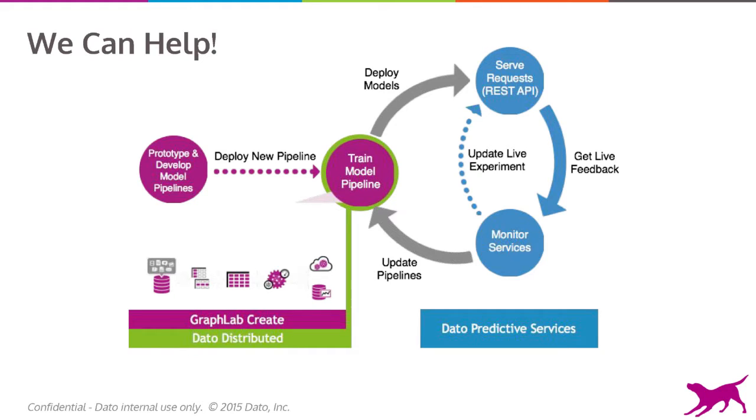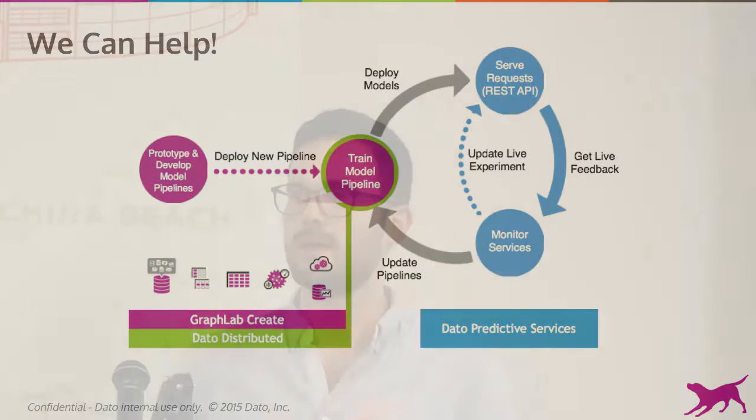We have GraphLab Create and the SFrame, which is an open source sub-component of GraphLab Create. It's an out-of-core computing data structure that allows you to scale up to the size of your hard drive and do a lot of feature engineering and transformation. We also have machine learning models across the spectrum: image analytics, graph analytics, text analytics, and more standard models like trees. After you've built a model, we have predictive services — a way for data scientists to deploy their models as a service, do A/B testing, and version their models.